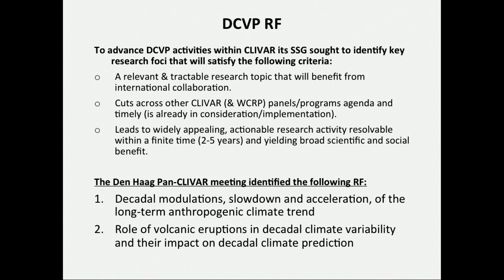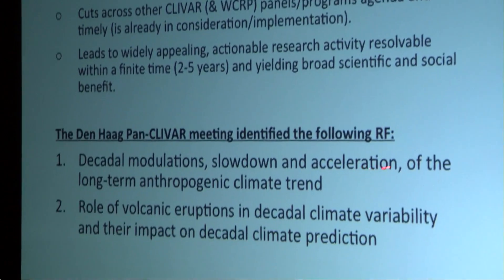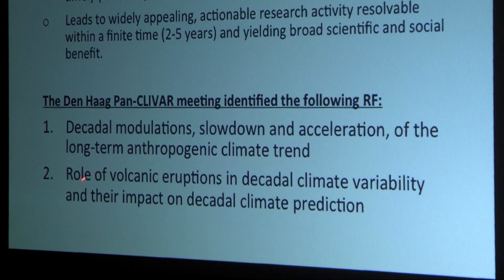The two research foresight themes we decided on completely overlap with the research foresight of DCPP. They are: first, decadal modulations — slowdown and acceleration of the long-term anthropogenic climate trend, in other words decadal variability in the climate system; and second, the role of volcanic eruptions in decadal climate variability and their impact on decadal climate prediction.